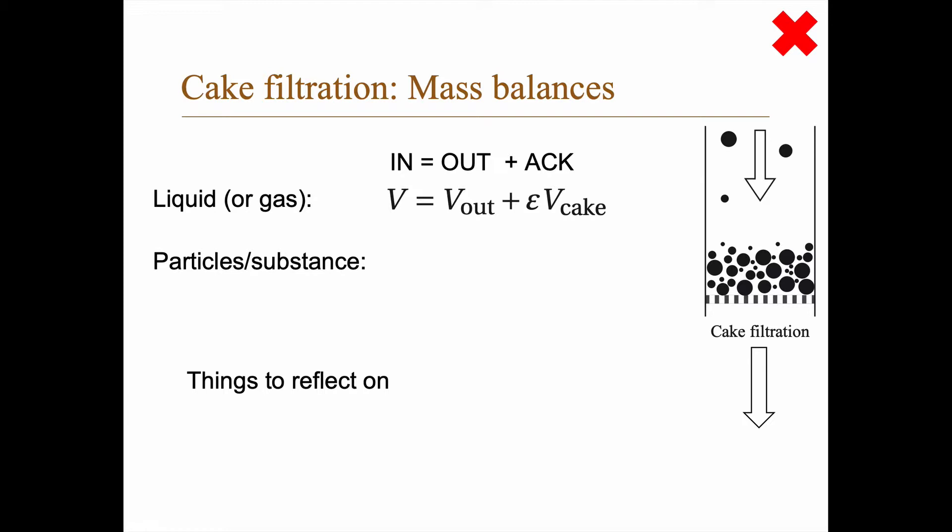What about the particles? Well, if you have a concentration of particles C and a volume that you want to filtrate, then V times C is the amount of particles you have. Preferably, you don't want any particles to pass through. So let's assume that that's zero. Otherwise, you have to have a C out concentration here times V out. And what's accumulated is the mass of the dry weight of the cake. Now, if C here is in gram per liter and V is in liter, then this is in grams, right? And if you have other units, you have to adjust.